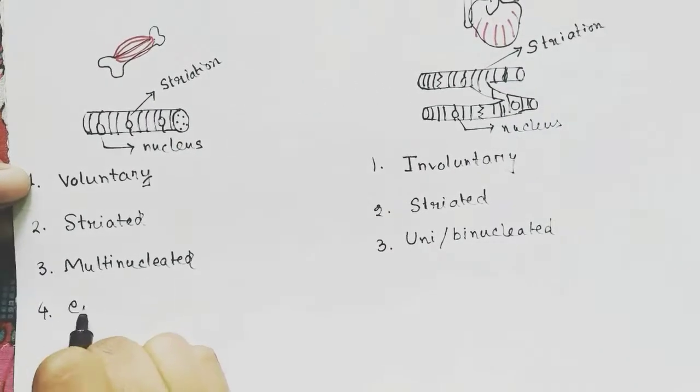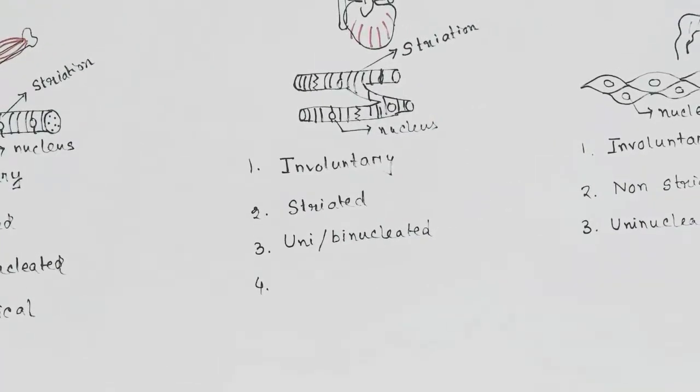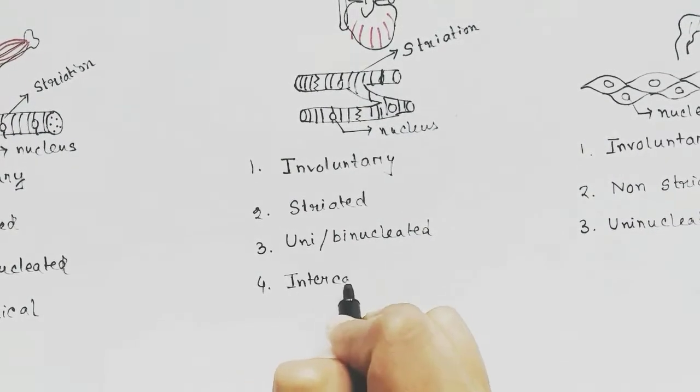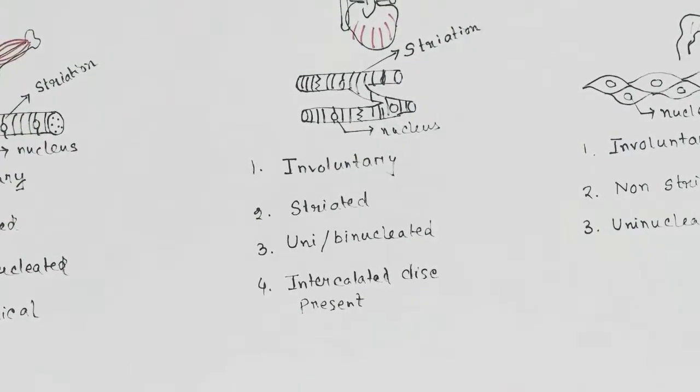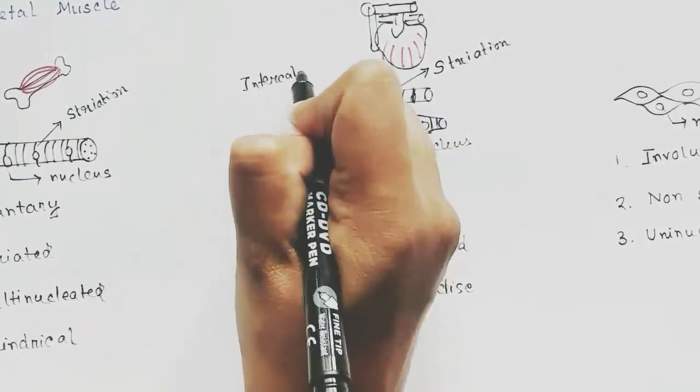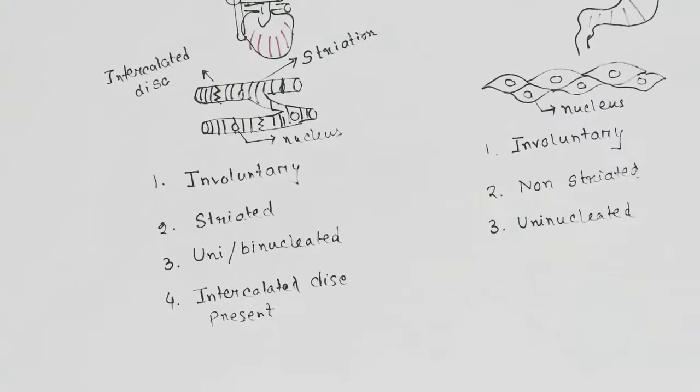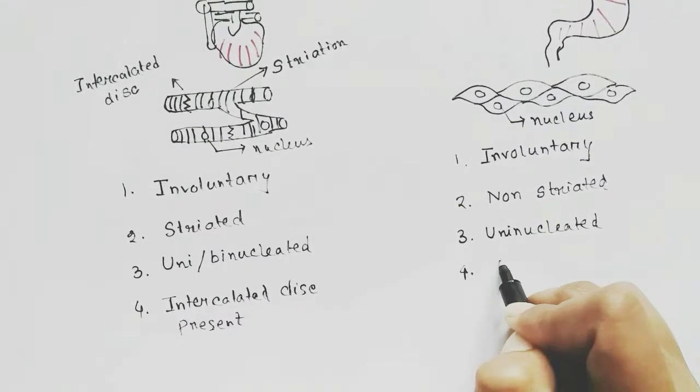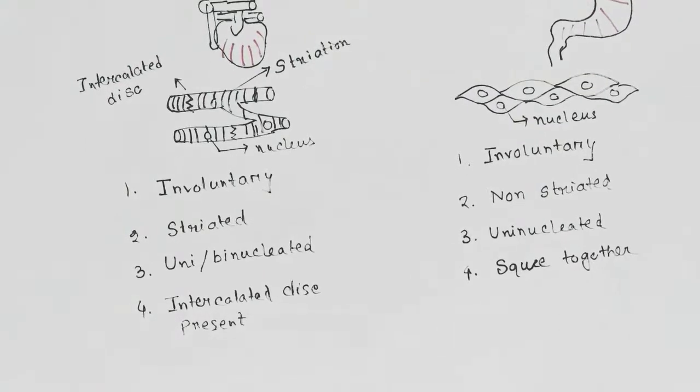Now how we identify skeletal muscle: it is cylindrical in shape. The cardiac muscle has intercalated disc, which is a special feature not found in any other muscles. The smooth muscles squeeze all together and when squeezed becomes thicker than resting position.